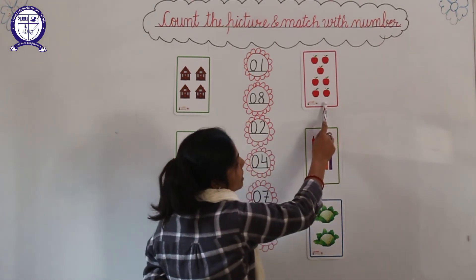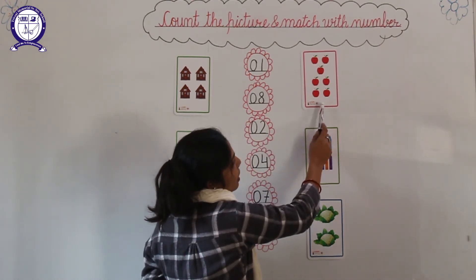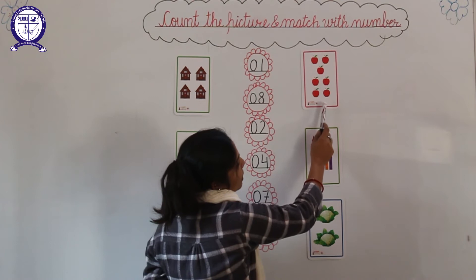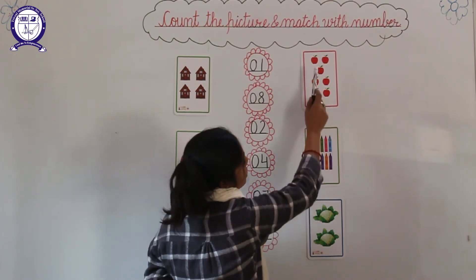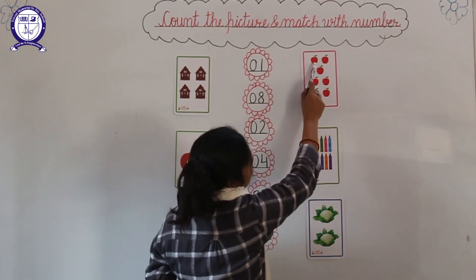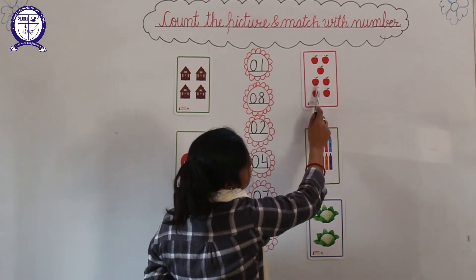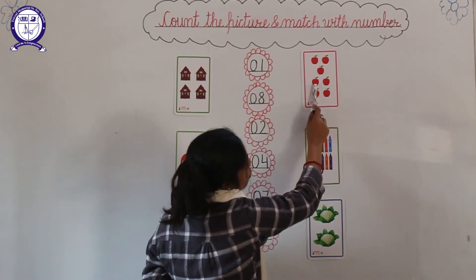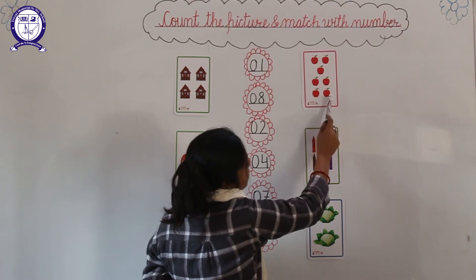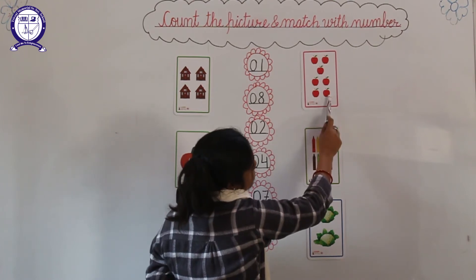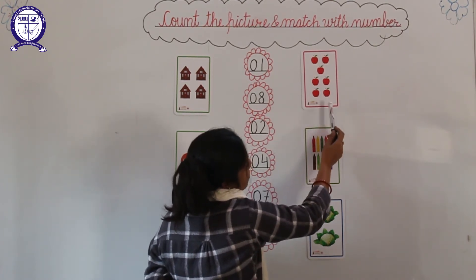This is an apple. These are apples. And how many apples are there? Count them: 1, 2, 3, 4, 5, 6, 7. There are 7 apples.